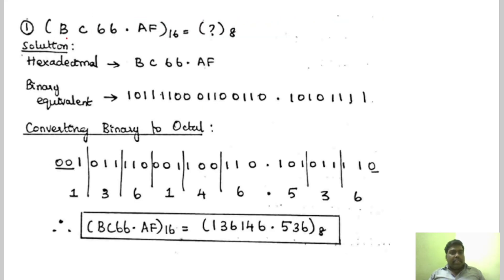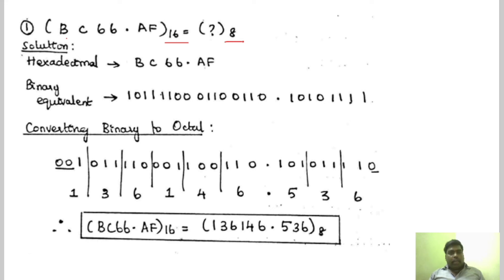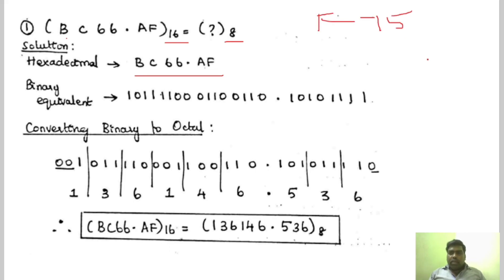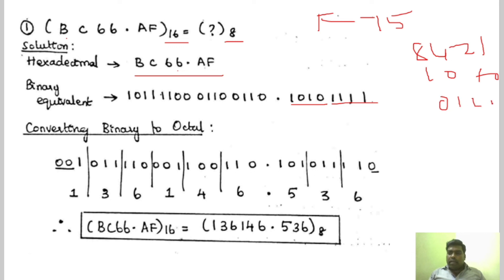So this is the question. Even if the question is not explicitly stated as hexadecimal to octal, by looking at the base you can understand this is hexadecimal, and we have to convert it to an octal number. This is the hexadecimal number, and the first step is to write the equivalent binary value. What is F? F is nothing but 15. So using the 8421 code, you write F as all 1s — 1, 1, 1, 1 — and all 1s equals 15. And similarly, A is 10, so it is 1, 0, 1, 0. And 6 is 0, 1, 1, 0.